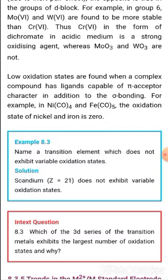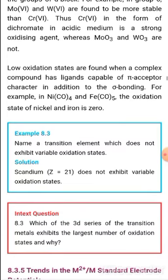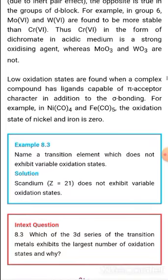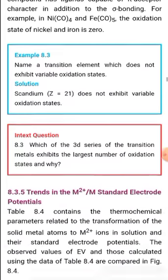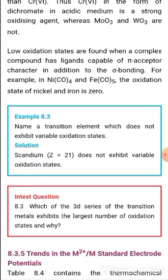Low oxidation states, including zero, are found when a complex compound has ligands capable of pi-acceptor behavior in addition to sigma bonding. For example, in nickel carbonyl Ni(CO)₄ and iron carbonyl Fe(CO)₅, nickel and iron both show zero oxidation state. This is possible only when they form complexes with pi-acceptor ligands. The carbonyl ligand accepts electron density from the filled d-orbital into its pi-antibonding (π*) orbital.